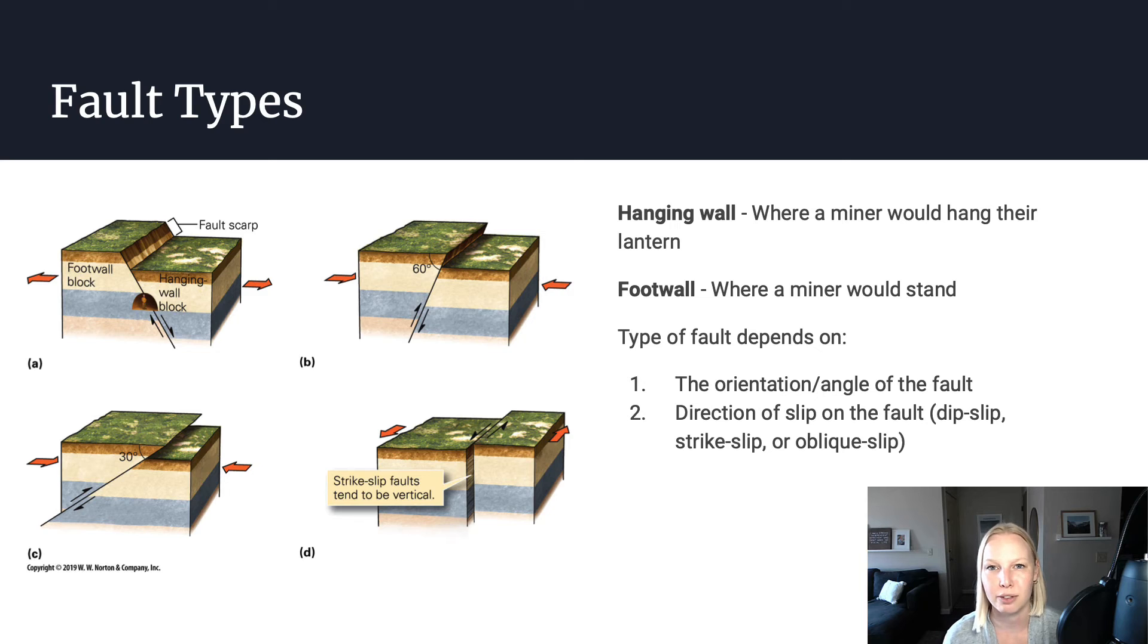When we talk about different fault types, the type of fault that you're looking at really depends on two things. It depends on the orientation of the fault - whether the fault is vertical, a vertical plane, or whether it has a steep dip, or whether it has a shallow dip. When we talk about dip, that is the angle that the plane is from horizontal down.